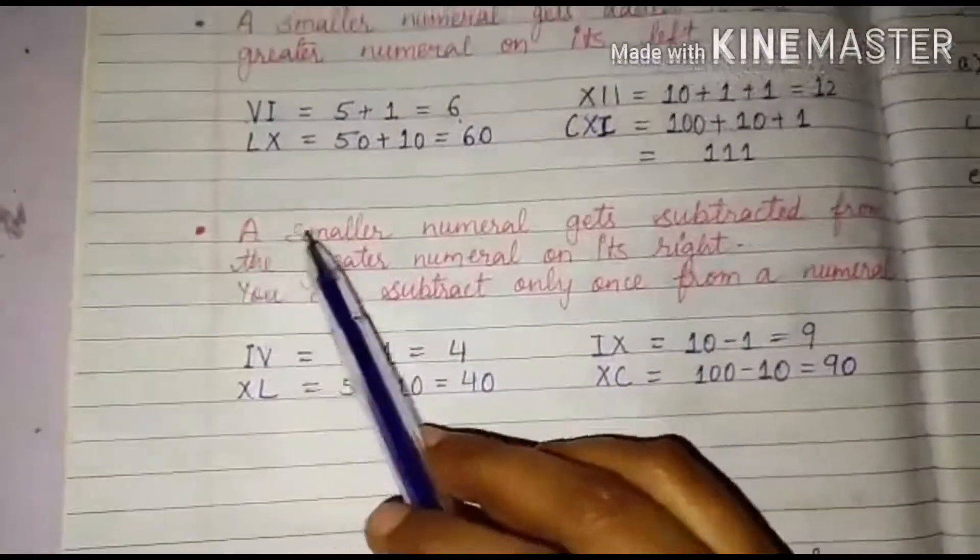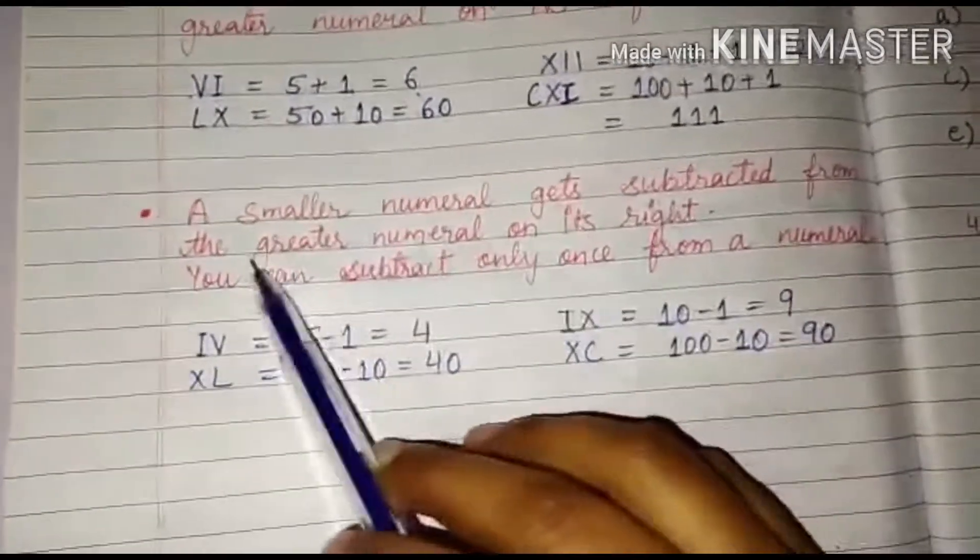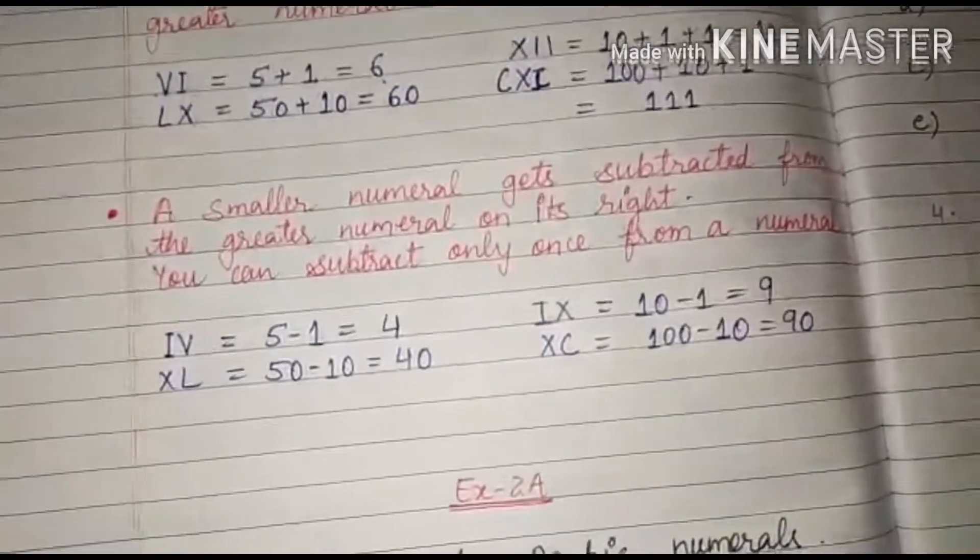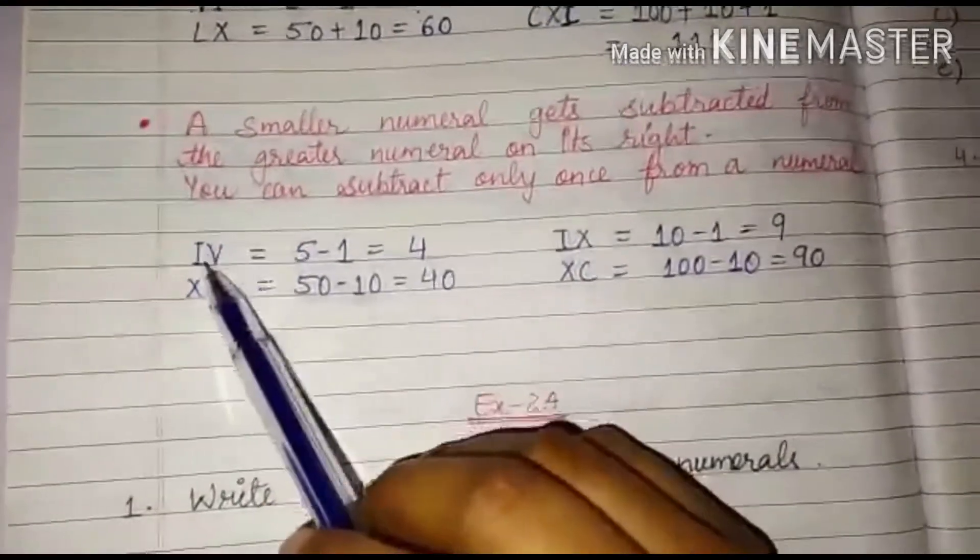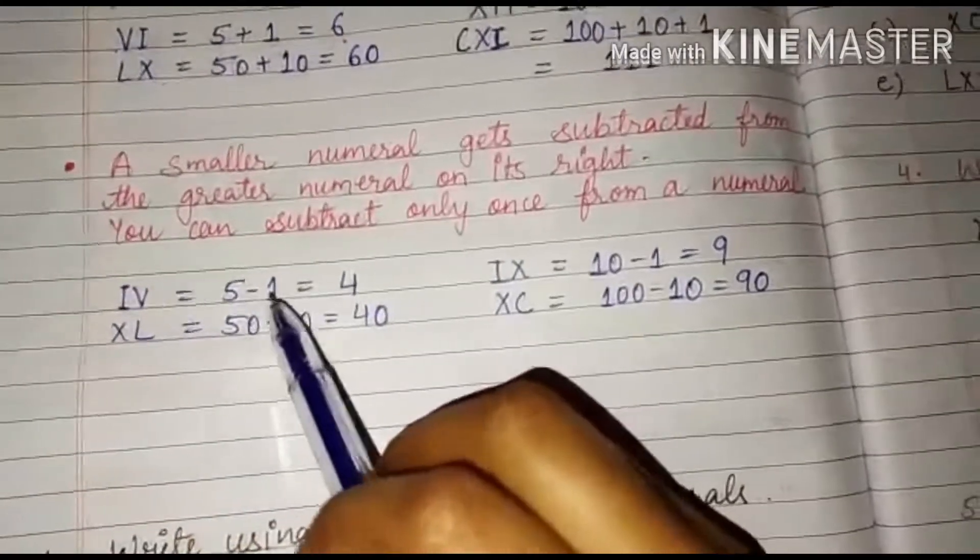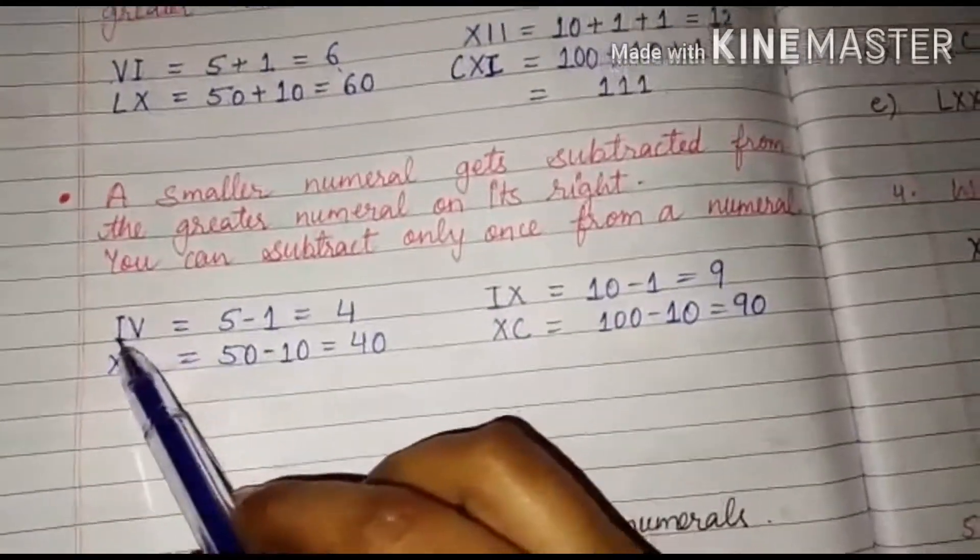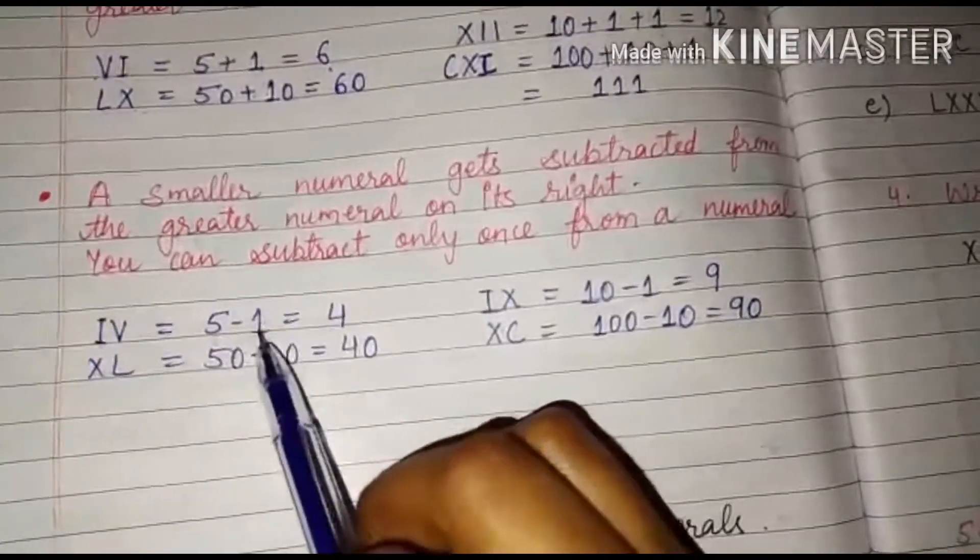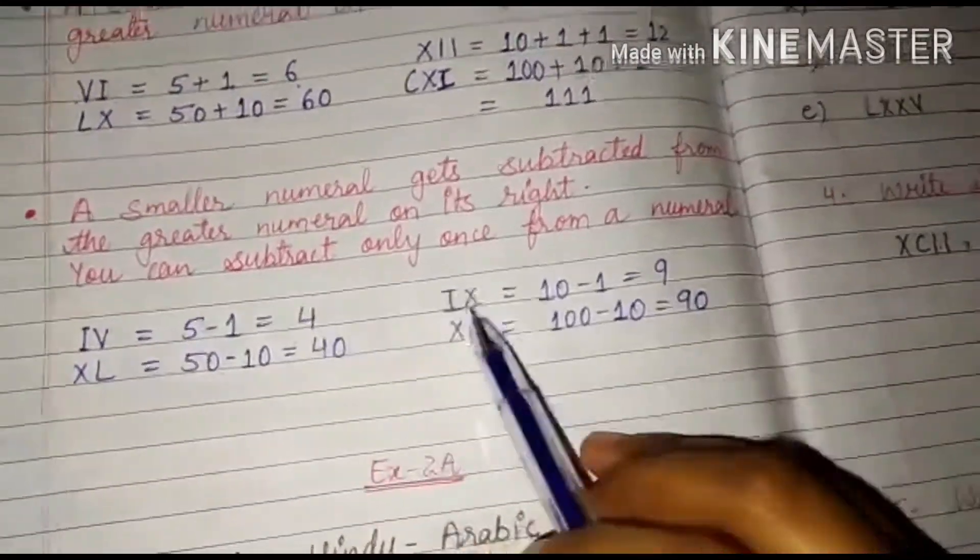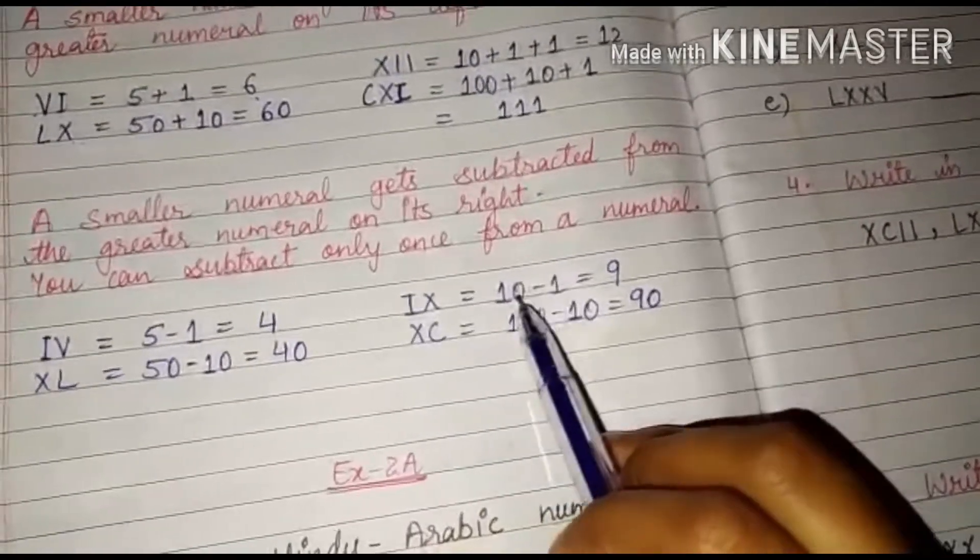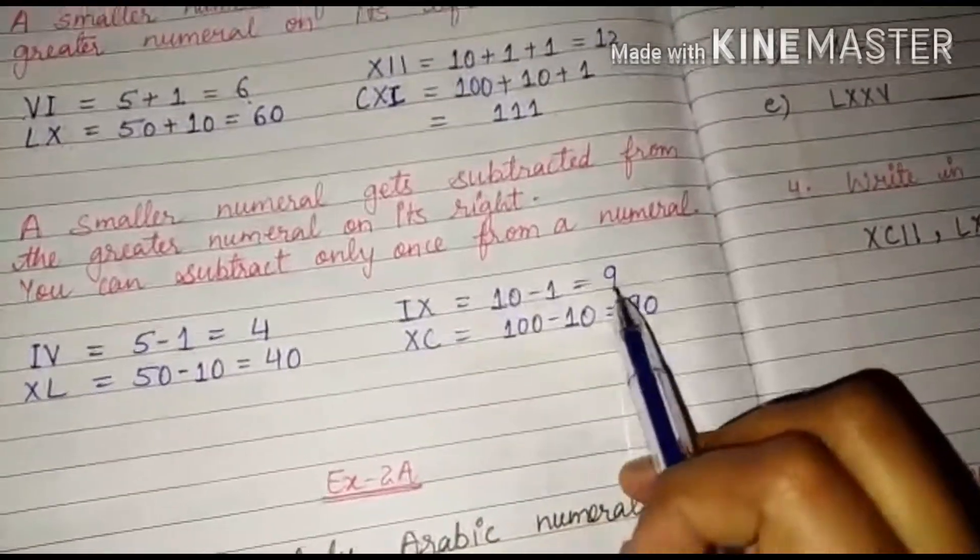Next point is a smaller numeral gets subtracted from the greater numeral on its right. You can subtract only once from a numeral. That means if a smaller number is written to the right of a greater numeral, you have to subtract them. That means IV. So in IV, what we have to do is 5 minus I. I means 1. So 5 minus 1, 4. IX. X is our 10 and I is our 1. So I am subtracting 1 from 10. So I will get 9 here.